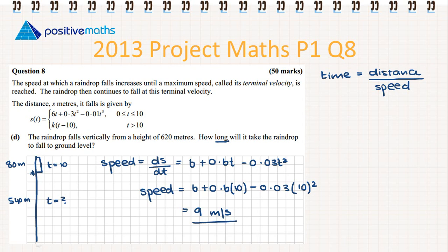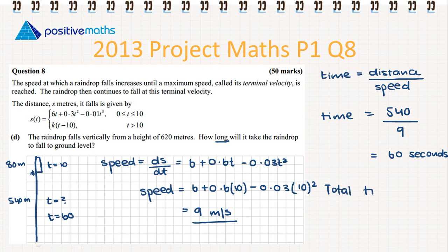Now we use the speed to find the time. Time = distance ÷ speed = 540 ÷ 9 = 60 seconds. So the total time is 60 + 10 = 70 seconds.